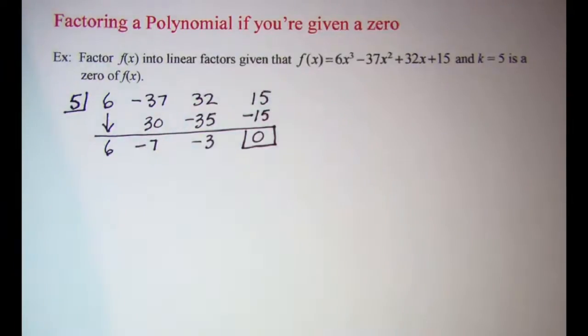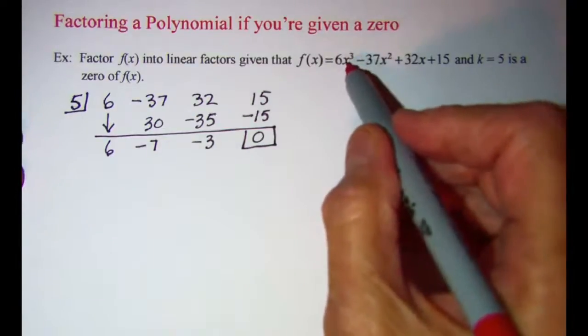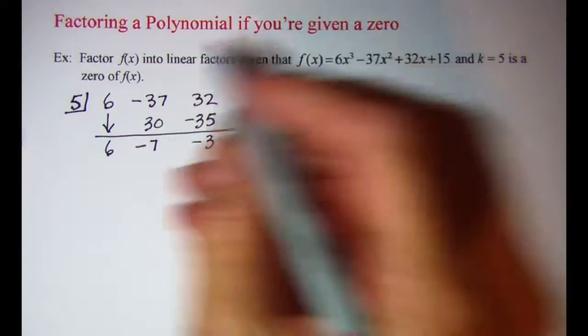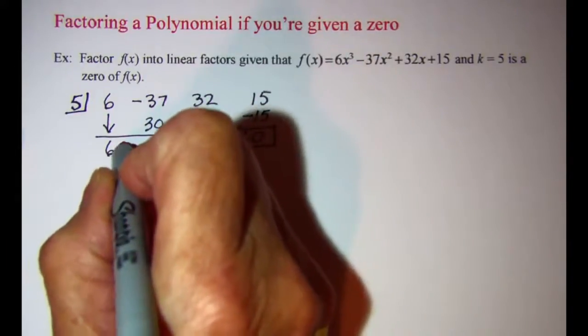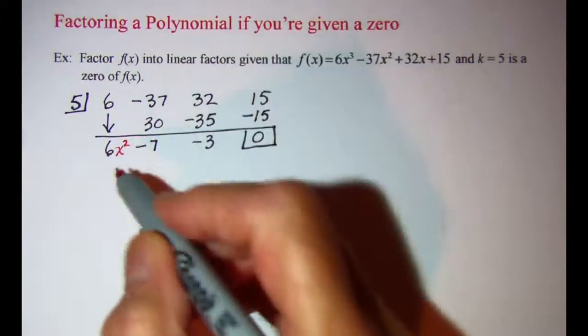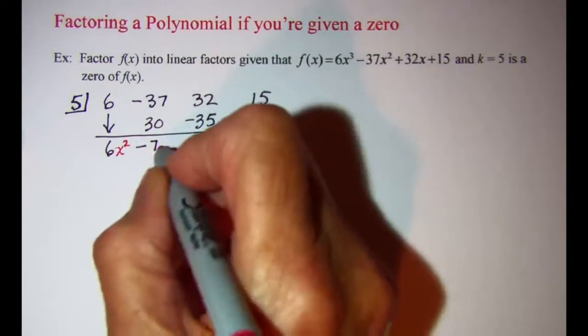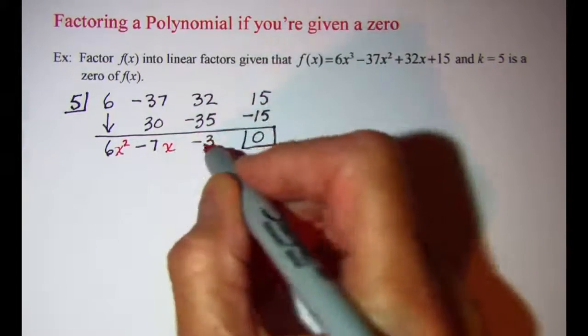Now notice that since my function was a third degree polynomial, this is going to be a second degree because it would be one less. So I have 6x squared minus 7x minus 3.